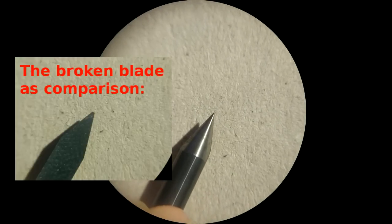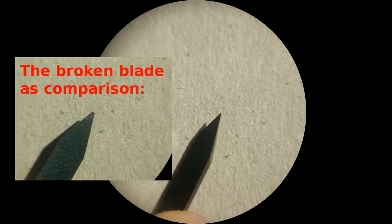This is an intact cutting bit in comparison. It clearly has a sharp tip where the other one looks kind of flat.